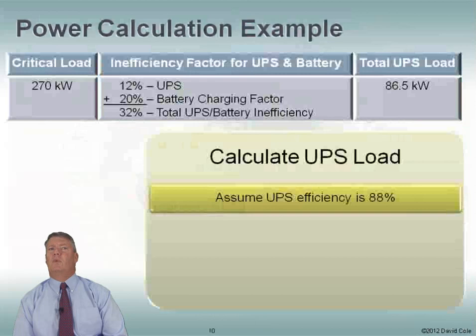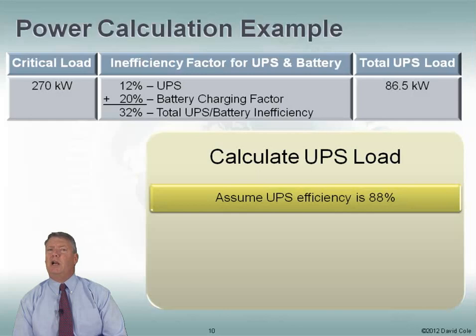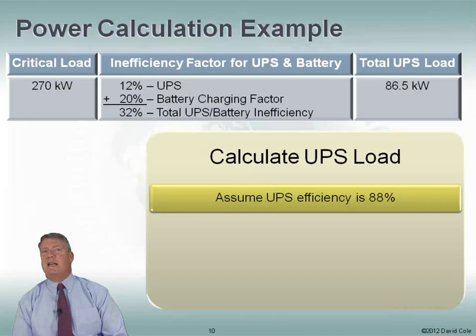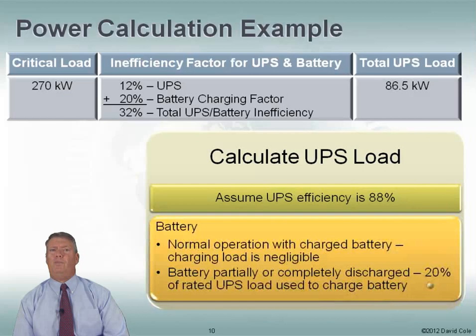Now we figure out our UPS load, looking at things like UPS efficiency. Let's assume our UPS efficiency is 88%, which means if I put 100 kilowatts in, 88 kilowatts come back out — I lose some power inside the UPS. Additionally, if the batteries aren't charged, as much as 20% of the power going into the UPS will be used to charge the battery. So I have 12% inefficiency plus 20% battery charging — that's 32%, which equals 86.5 kilowatts I need to account for in my total power.